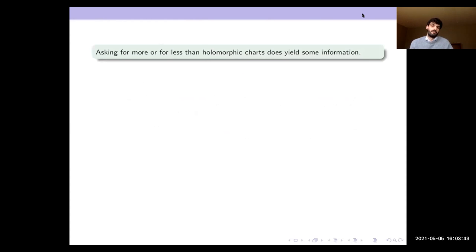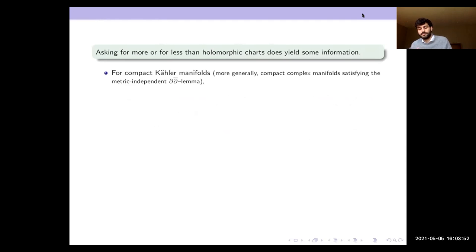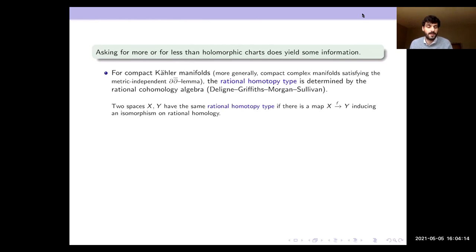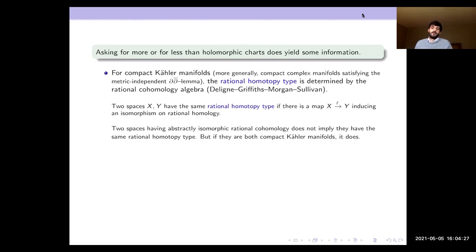If we ask for more, or maybe less, than holomorphic charts, we do have some information. For compact Kähler manifolds, or more generally compact complex manifolds satisfying the dd-bar lemma — which is a metric-independent statement unlike Kähler — the rational homotopy type is determined by the rational cohomology algebra, by a result of Deligne-Griffiths-Morgan-Sullivan from the 1970s. Two spaces have the same rational homotopy type if there's a map between them inducing an isomorphism on rational homology. This theorem says that if both spaces are compact Kähler manifolds, isomorphic rational cohomology does imply the same rational homotopy type.